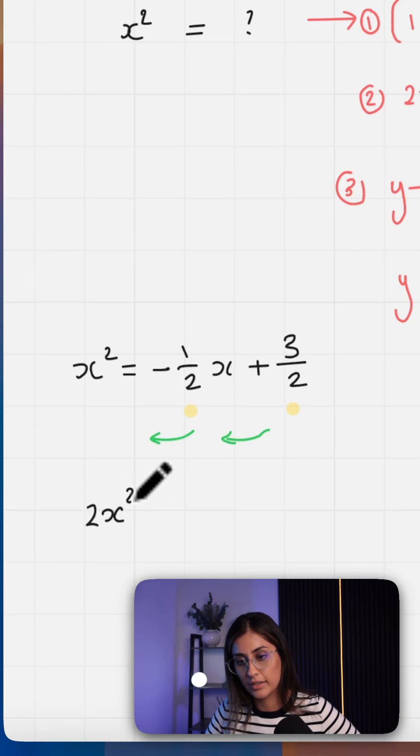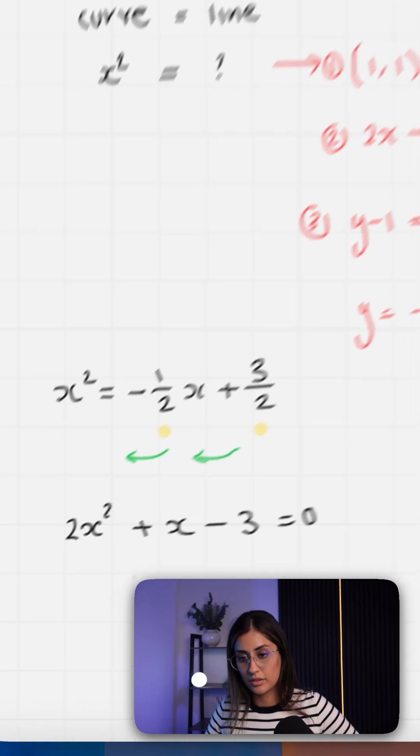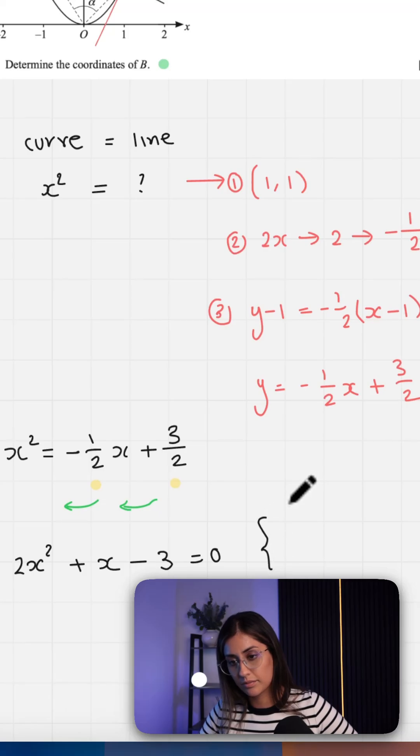So that's 2x squared. That becomes minus x on the other side is plus x. That becomes plus 3 on the other side is minus 3 equals 0. So this gives us x equals 1 and x equals minus 3/2.